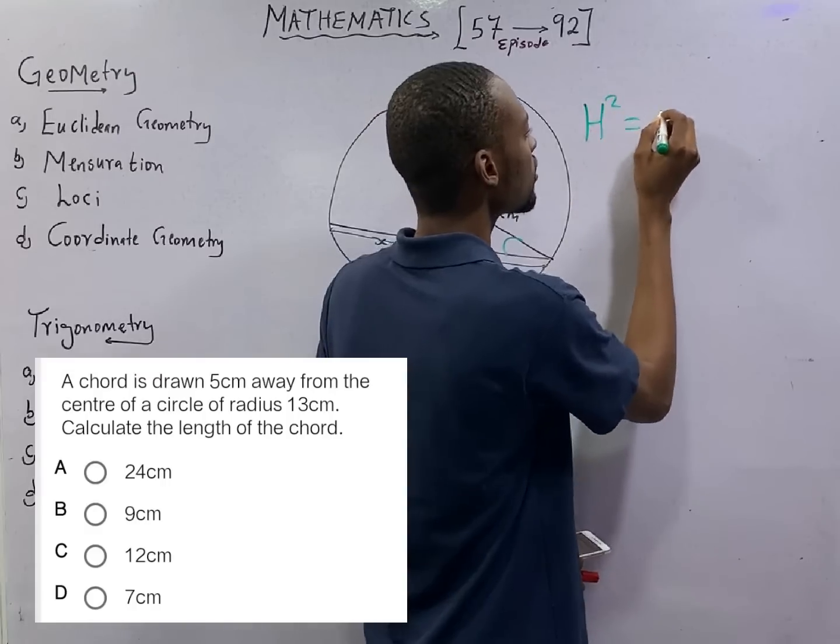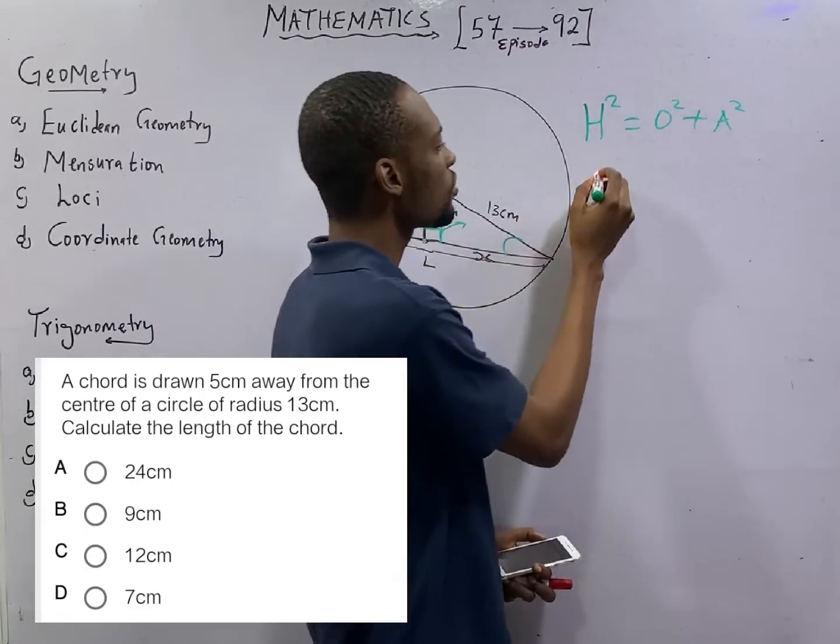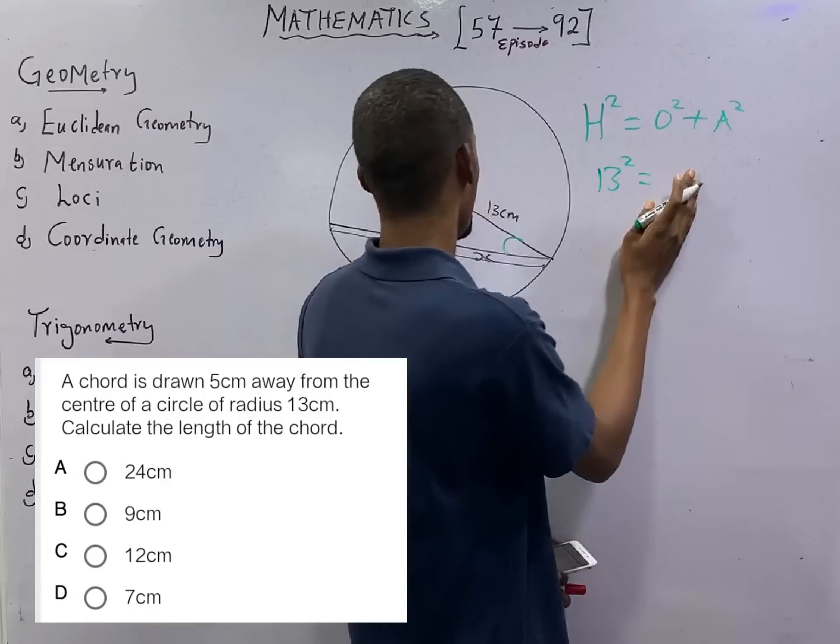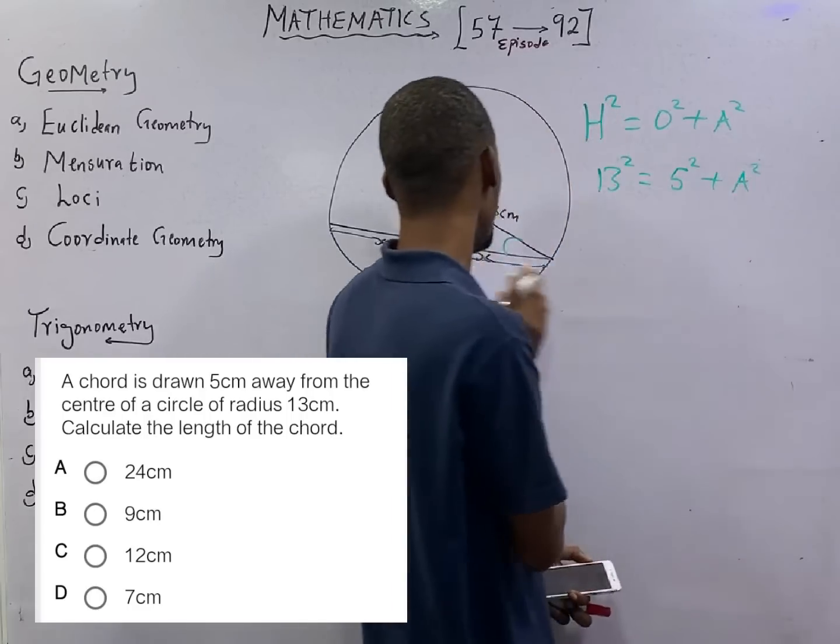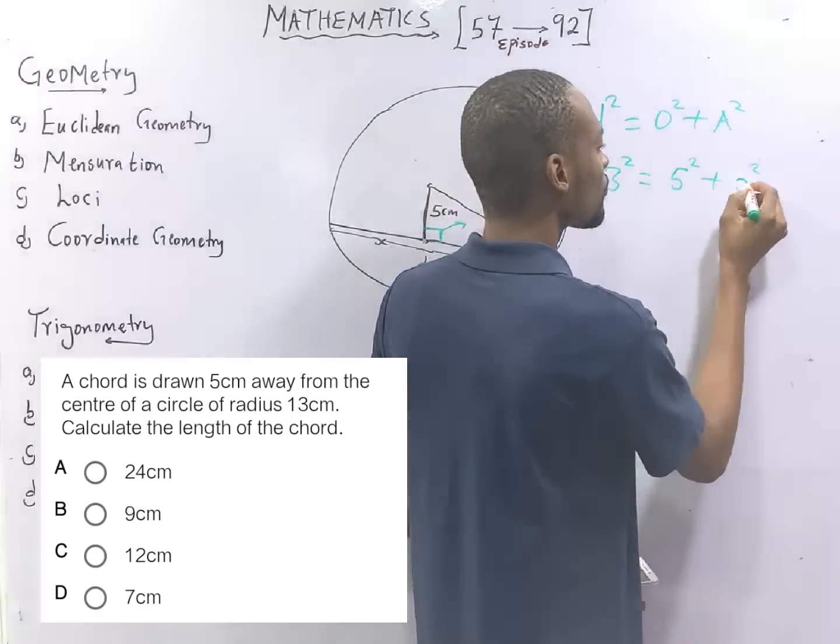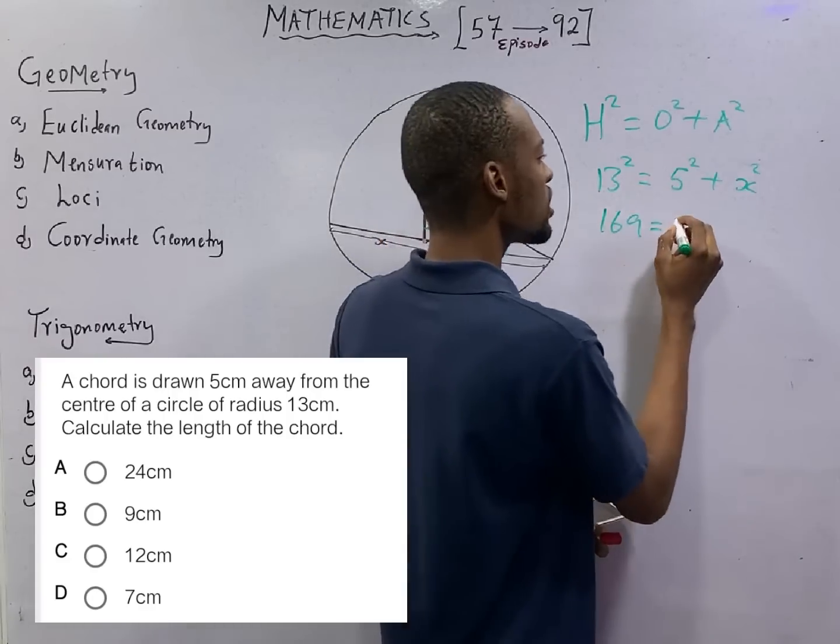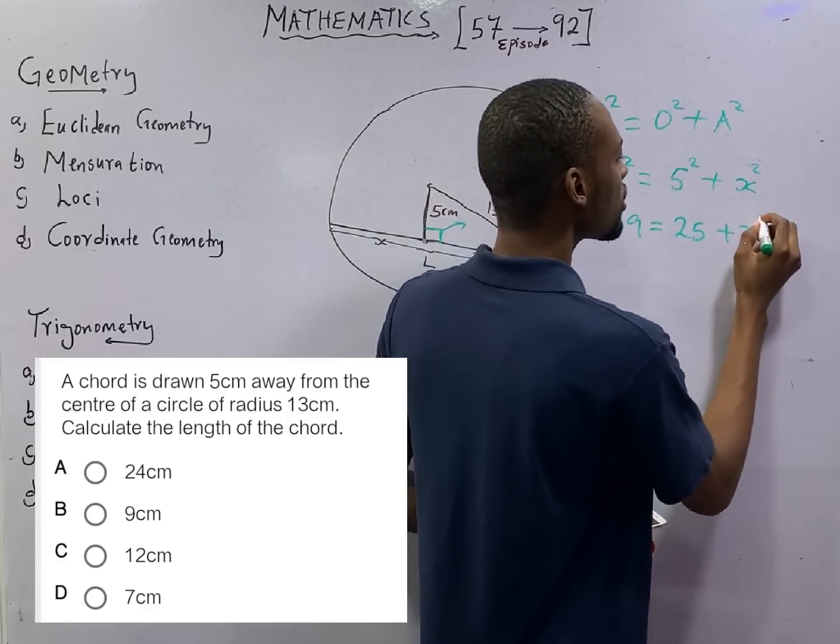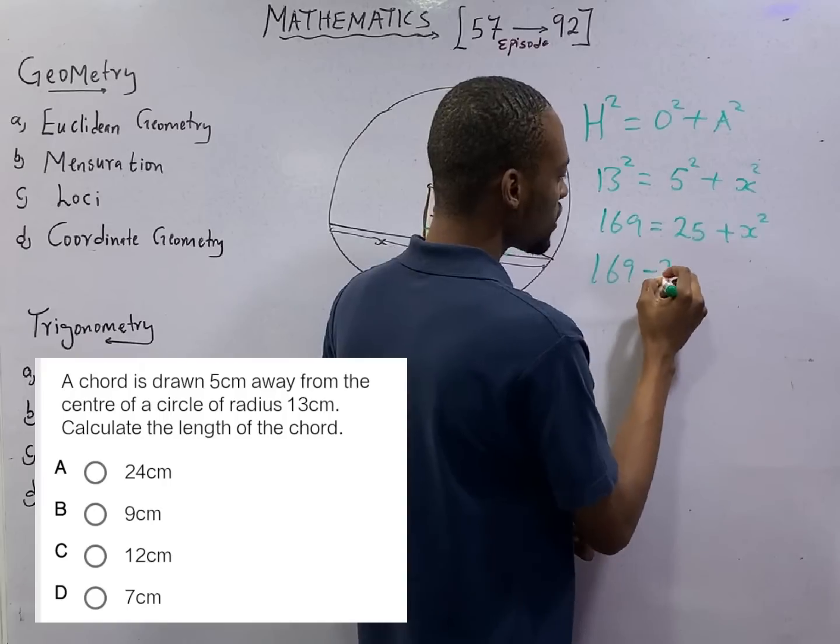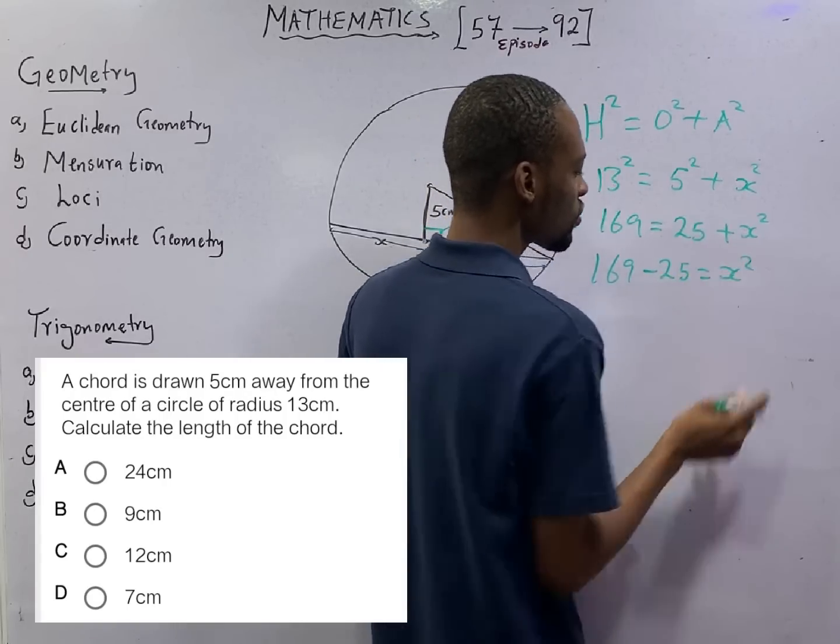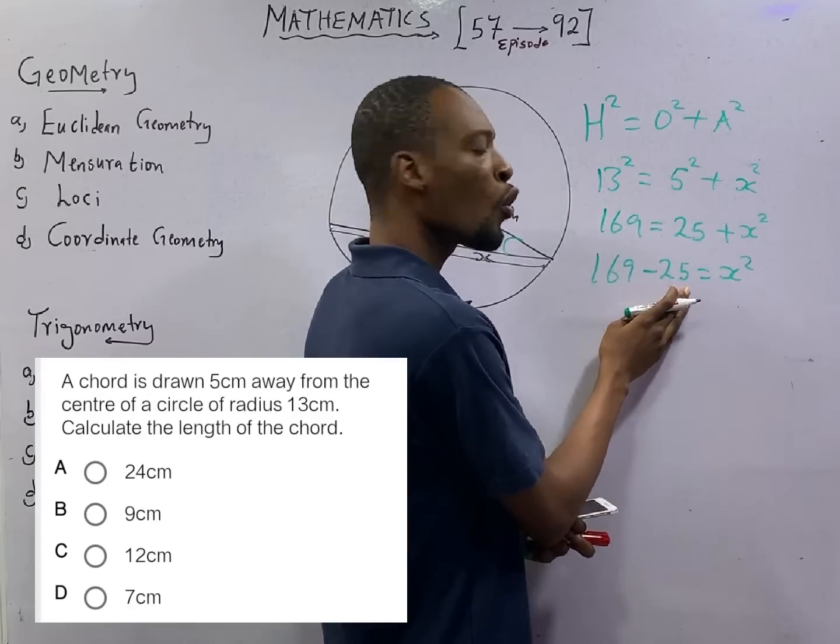hypotenuse squared equals opposite squared plus adjacent squared. The hypotenuse is 13, so 13² equals 5² plus S². 13² is 169, 5² is 25, so 169 = 25 + S². Collecting terms, 169 minus 25 equals S². S² equals 144.